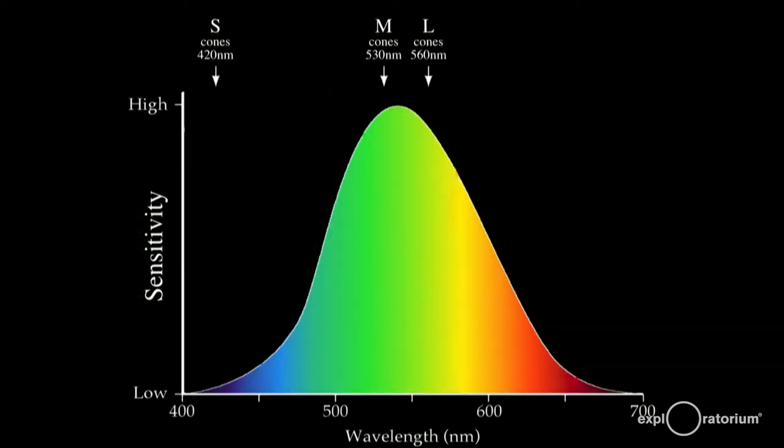If you could combine the three sensitivities of the three types of cones, this is the result. We are very sensitive in the green part of the spectrum, and much less sensitive in the red and blue-violet parts of the spectrum. We probably evolved this way because this is pretty much the amount of each color light that the sun produces. We most efficiently use what the sun makes the most of.